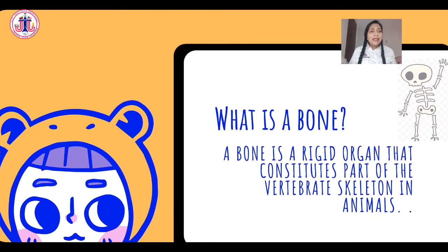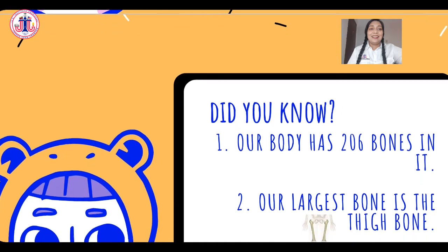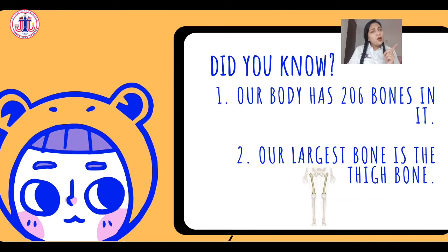What is a bone? A bone is a rigid organ that constitutes part of a vertebrate skeleton in animals and also in human beings. Did you know our body has 206 bones in it? And our largest bone is the thigh bone, which is located in the legs.